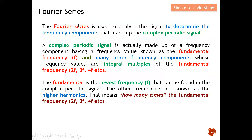Fourier series is used to analyze the signal to determine the frequency components that make up the complex periodic signal. It lets us see how many frequency components are used to generate this signal, and how many dominant frequency components we need in order to generate this signal.